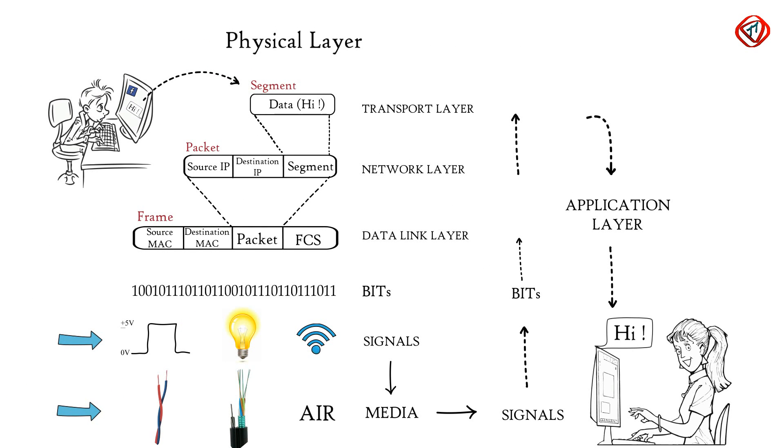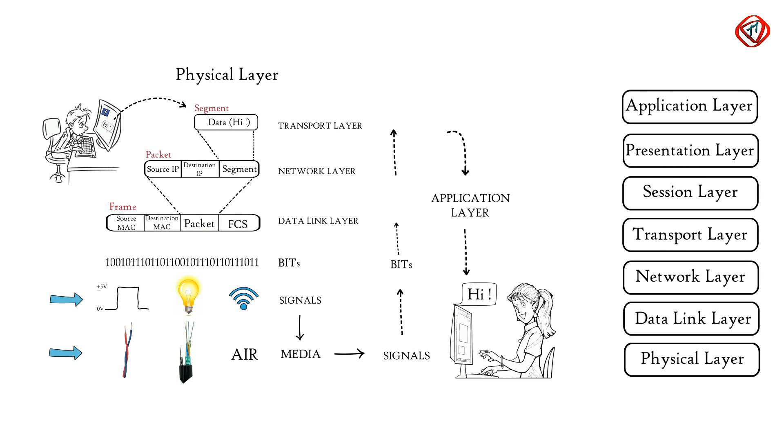In this way, OSI model is helping to transfer data between distant hosts. So these 7 layers of OSI model are lying behind the smooth functioning of internet.